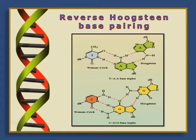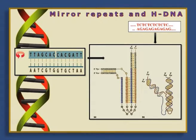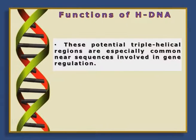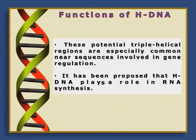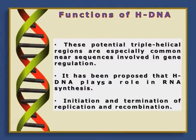Similarly, reverse Hoogsteen base pairing is formed by base pairing of T·A·A and C·G·G. The repeating unit of a triple helix is a base triplet. H-DNA is also found in DNA — it is a kind of triple helix formed when the DNA sequences are in mirror repeats. As shown in the diagram, it becomes hinge-shaped and is stabilized by hydrogen ions. This triple helix plays a very important role during regulation of gene expression, in RNA synthesis, and in initiation and termination of replication and recombination.